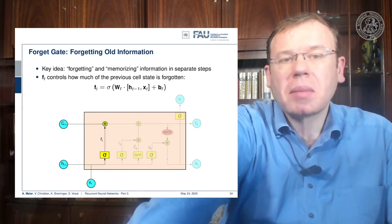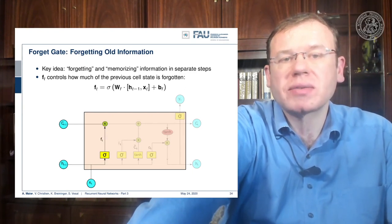And this is then multiplied to the cell state, so we decide which parts of the cell state vector to forget and which ones to keep.